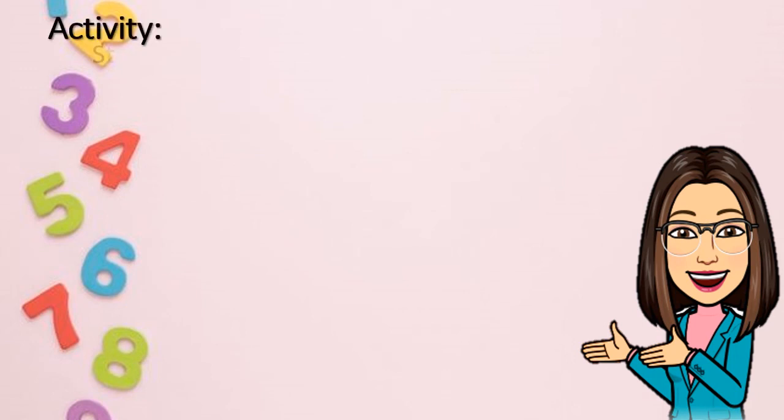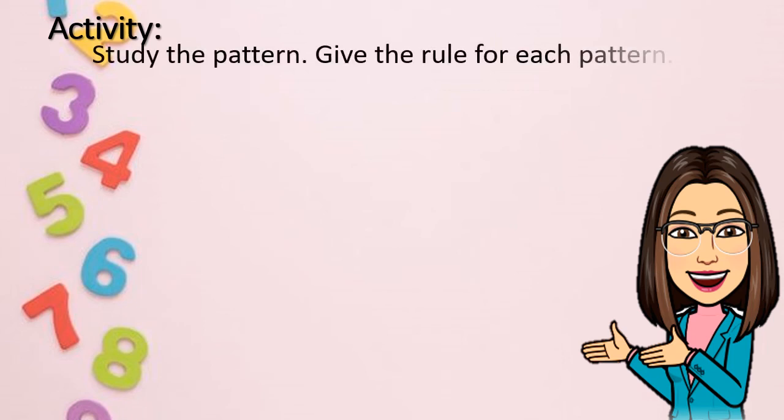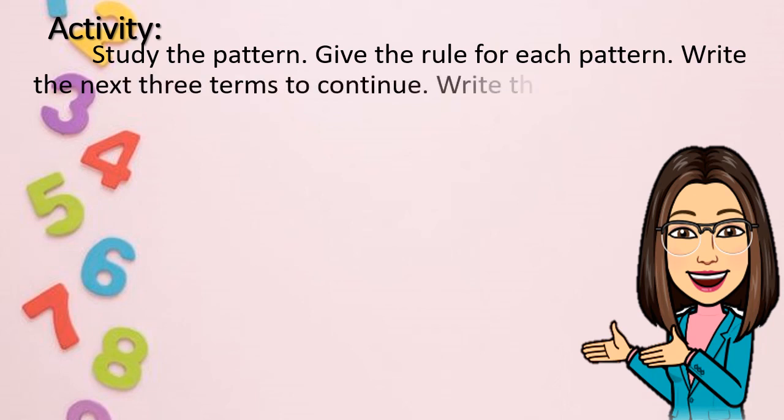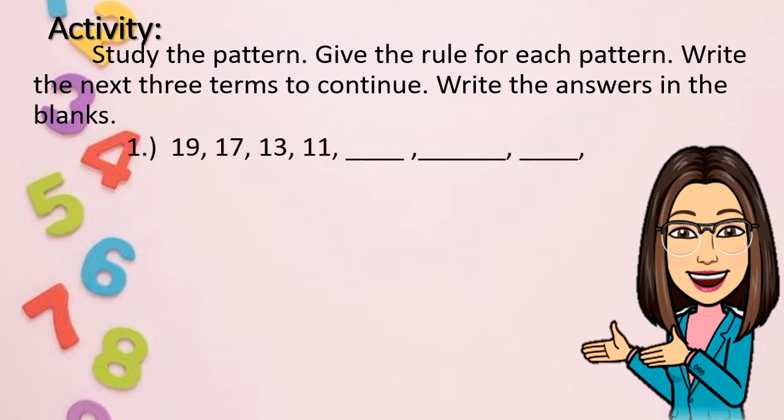Now for your activity, study the pattern. Give the rule for each pattern. Write the next three terms to continue. Then write the answers in the blanks. Number 1: 19, 17, 13, 11. And what are the next three terms? And what is the rule?